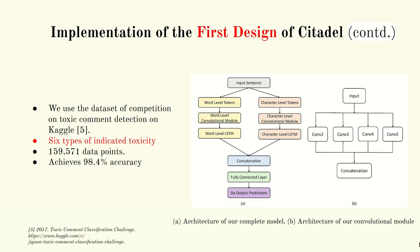To implement the system, we built a deep learning-based system where we used a conversational module, an LSTM module, and fully connected feed-forward layers. We used the dataset of a competition on Kaggle. The model can detect six types of indicated toxicity and has achieved 98.4% accuracy. Here we can see the architecture of our complete model.